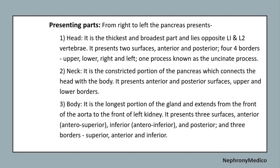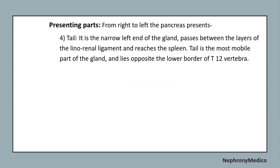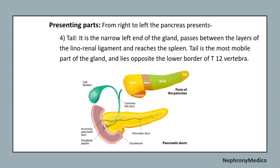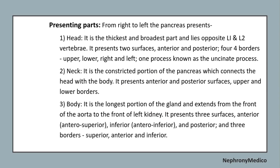The pancreas consists of parts: from right to left, it is head, neck, body, and tail. The head is the thickest and broadest part and presents two surfaces — anterior and posterior — and four borders: upper, lower, right, and left, and one process known as the uncinate process.